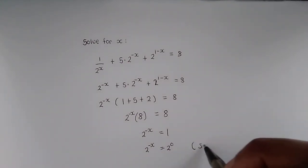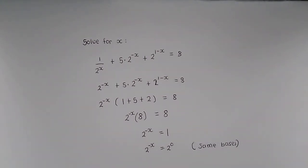Now we have the same basis. Because we have the same basis we can equate the exponents, so negative x equals 0, meaning that x equals 0.